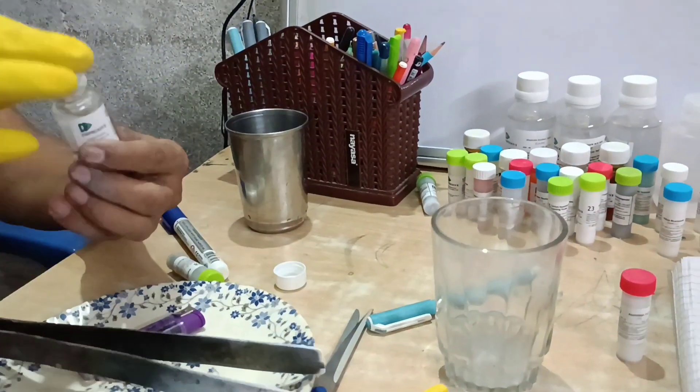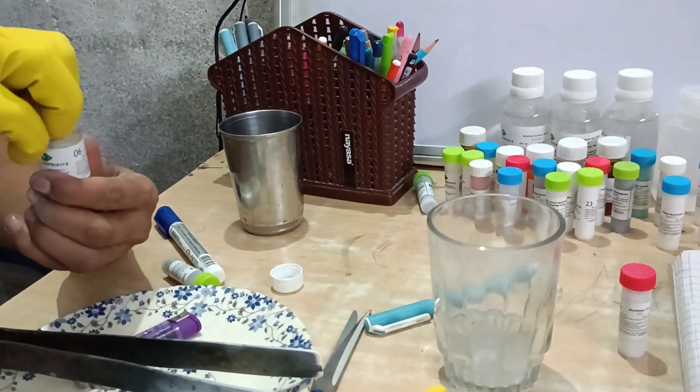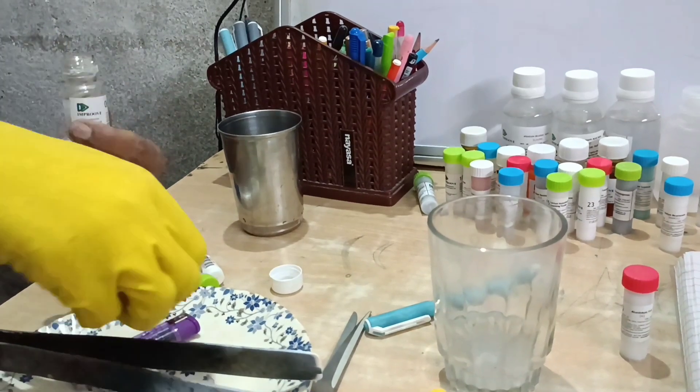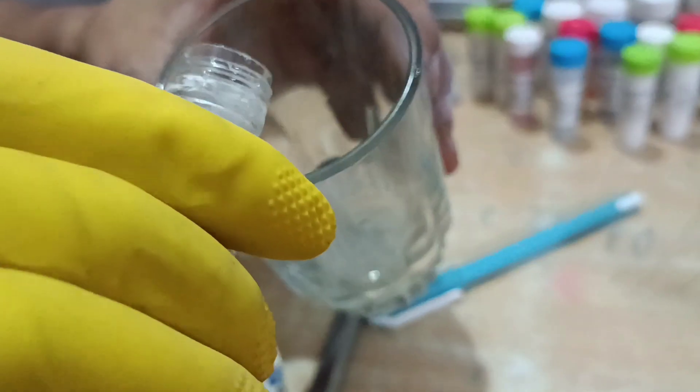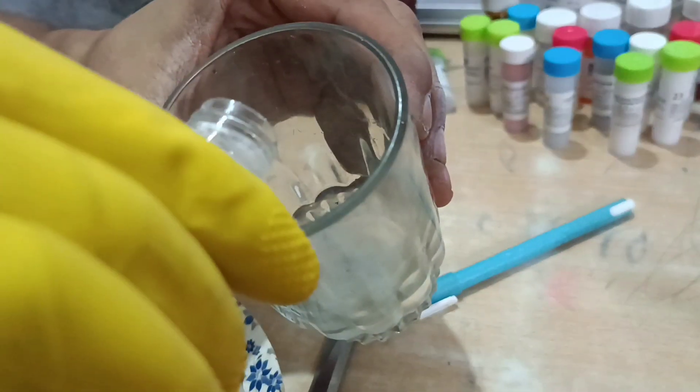Now we will see how the base is done. We will add the phenolphthalein indicator, and we will see a little color change. You can see this color change.